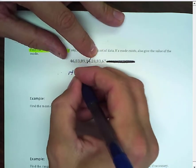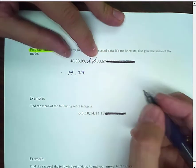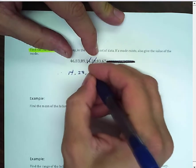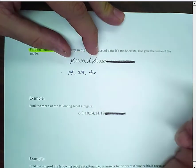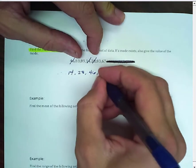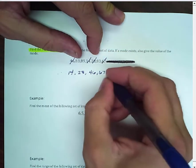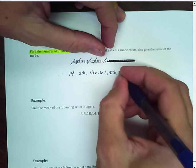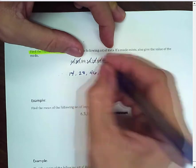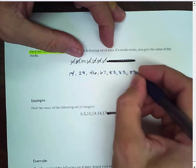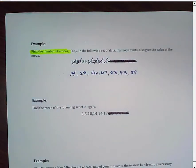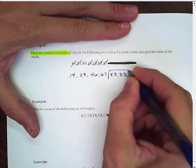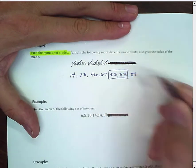So, there's 14, there's 28, and of course, this isn't necessary if you don't want to do this. It's just a suggestion on my part. There's 46, and 67, 83, and look, I've got another 83, and then 89. What that does, it takes a little longer, but it makes it very obvious as to what your mode is. So, my mode here, I have one of them, and that mode is 83.